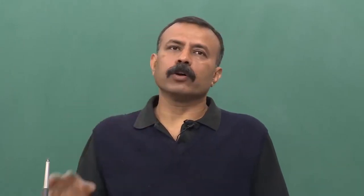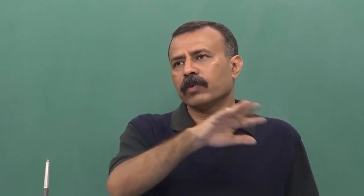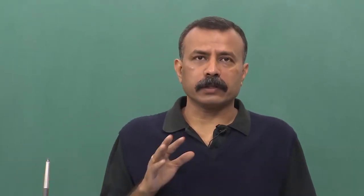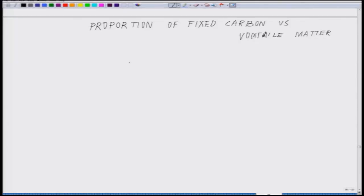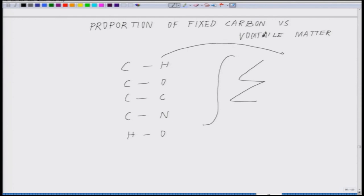Each one of these elements forms different kinds of bonds with each other: carbon-carbon bonds, carbon-hydrogen bonds, carbon-oxygen bonds, oxygen-hydrogen bonds, and similarly with all the different alkali metals. What actually determines which material will get transformed into a good fuel is determined by the summation of all the bond energies. We will have to integrate or sum these things in terms of total bond energy.